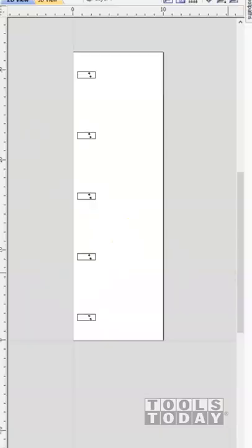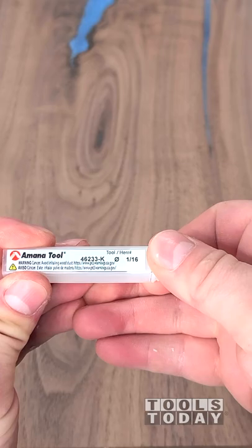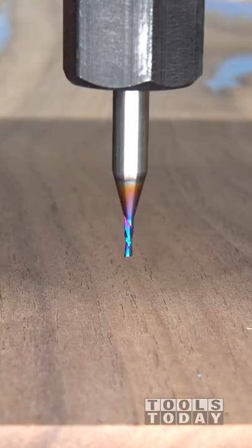I did an array copy here to get everything lined out where I want it. Then we set our toolpath to be able to cut all of those holes, and now we have everything perfectly in line.